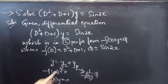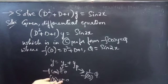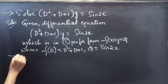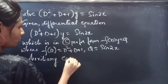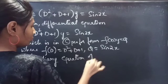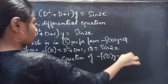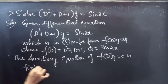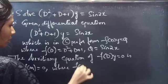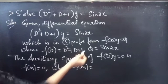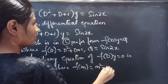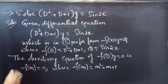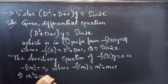Let us find yc using the rules of the auxiliary equation of the homogeneous equation. The auxiliary equation of f(D)·y = 0 is f(m) = 0, where f(D) = D² + D + 1. Replacing the differential operator by m, we get f(m) = m² + m + 1, so the auxiliary equation becomes m² + m + 1 = 0.